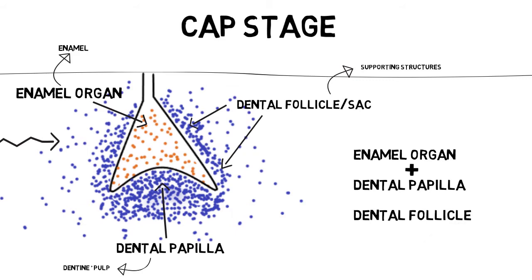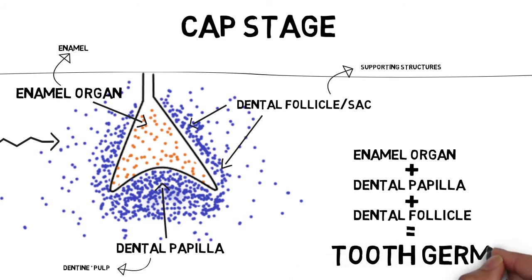These three groups of cells together will eventually give rise to your entire tooth, and together they are known as the tooth germ or dental organ. What happens in the cap stage is that there is differentiation of these three groups — the enamel organ, the dental papilla, and the dental follicle — and they can now be identified as separate groups of cells.